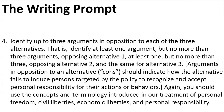Number four: Identify up to three arguments in opposition to each of the three alternatives. That is, identify at least one argument but no more than three arguments opposing alternative one, at least one but no more than three opposing alternative two, and the same for alternative three. Arguments in opposition to an alternative — cons — should indicate how the alternative fails to induce persons targeted by the policy to recognize and accept personal responsibility for their actions or behaviors. Again, you should use the concepts and terminology introduced in our treatment of personal freedom, civil liberties, economic liberties, and personal responsibility.